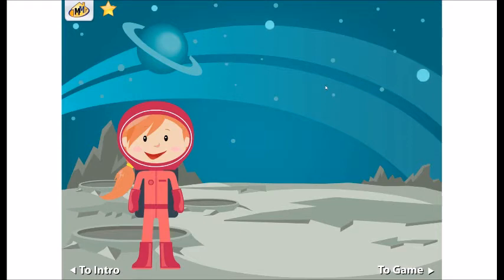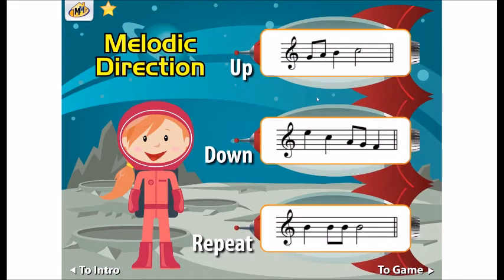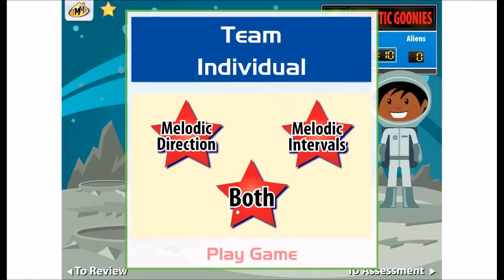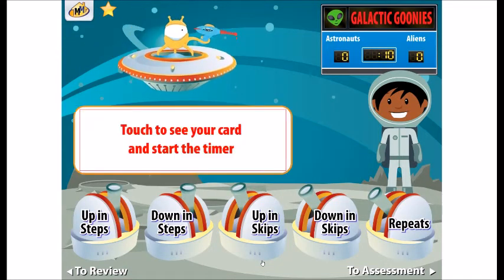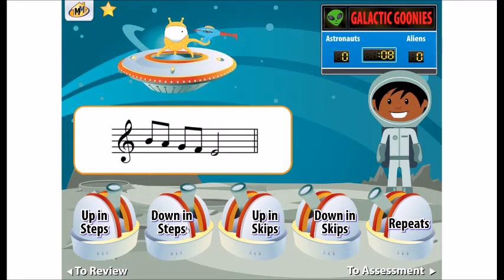Take a look at these three melody fragments. Remember that when you are trying to determine the direction of a melody, you must trace the note heads, not the stems. Options allow you to focus on one concept or both, and to play with a team or as an individual. A correct answer will hit the spaceship with a meteor, and a wrong answer will throw slime at the astronaut.